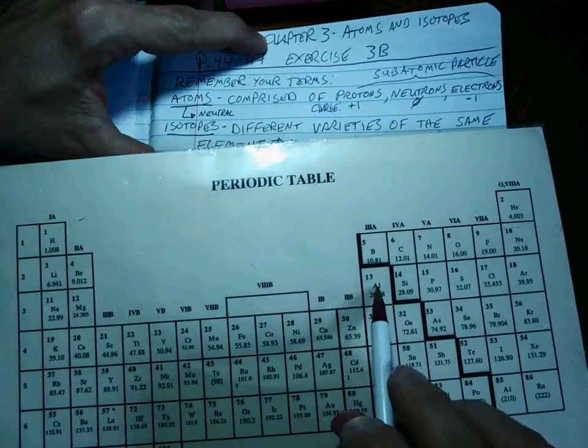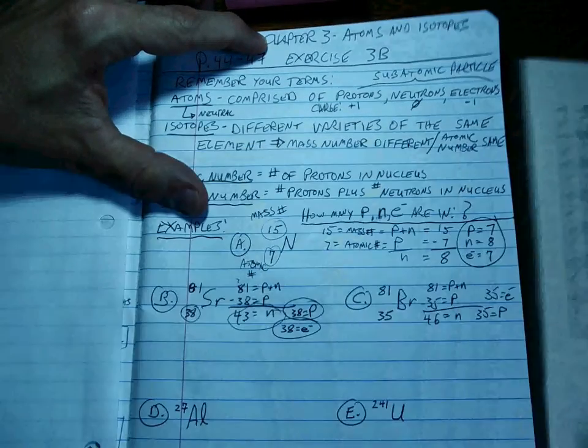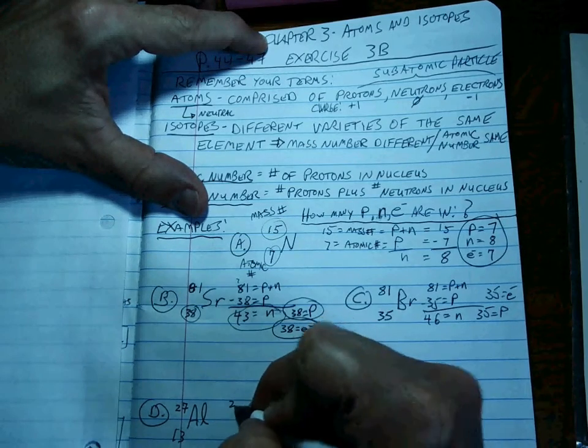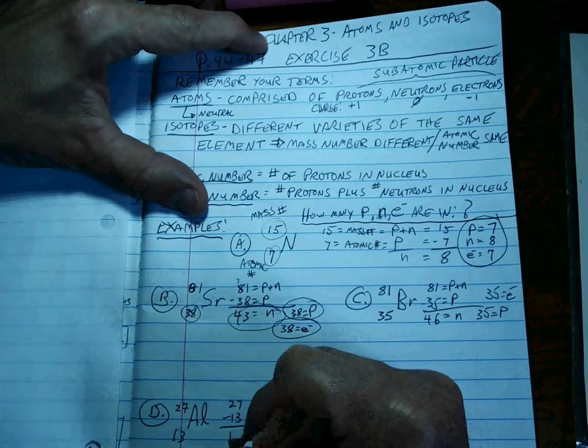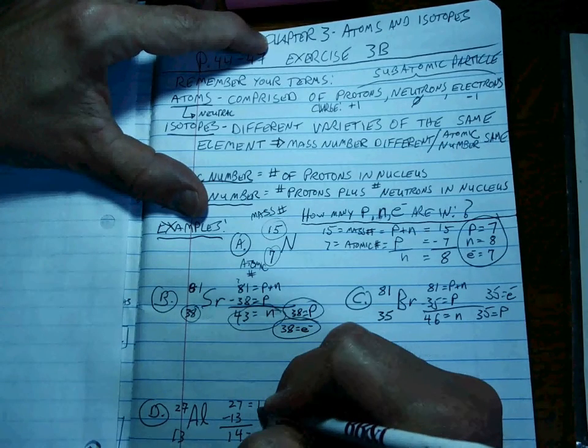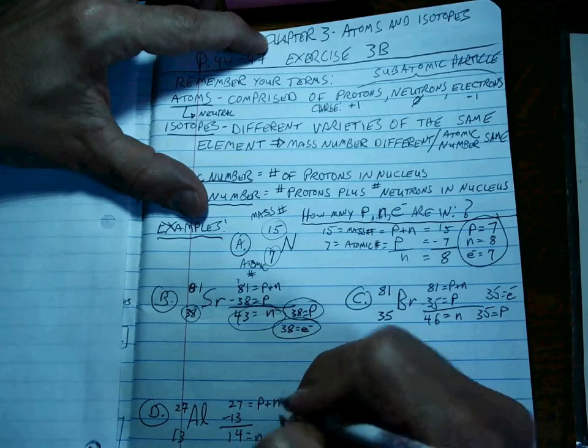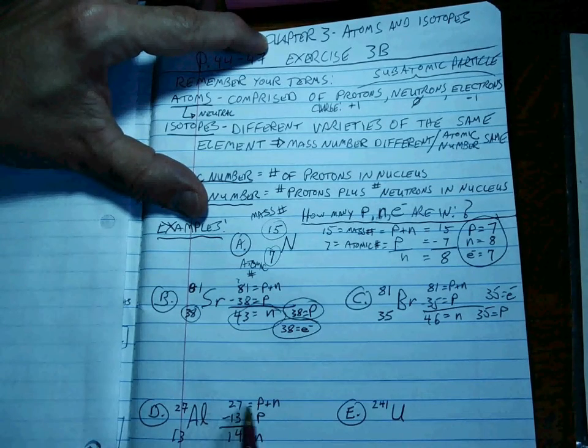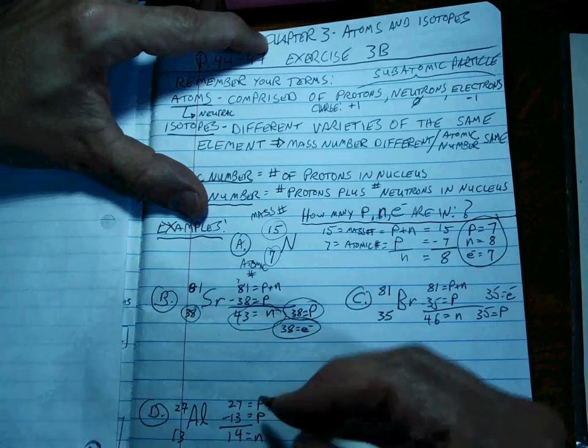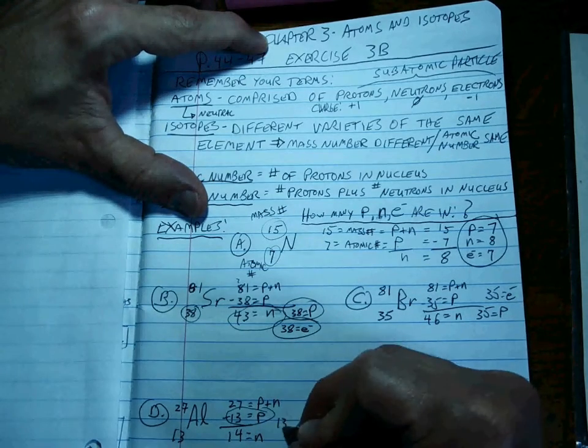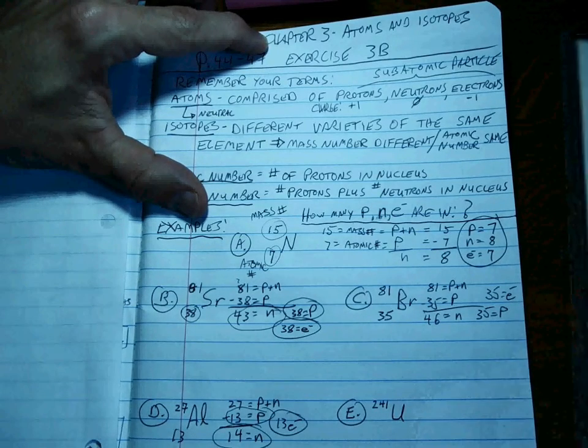And the other two, just as easy. Aluminum is element number 13. So, 27 minus 13 is equal to 14. That's going to be the neutrons. Because that's the atomic number right there. And that's the mass number right there. So, 13 protons, 13 electrons, 14 neutrons.